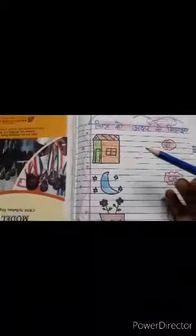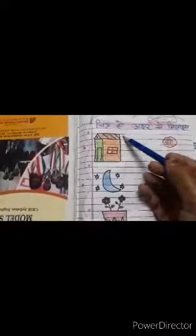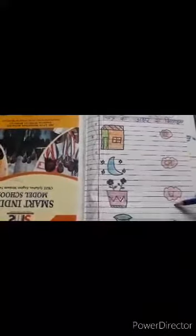Good morning kids. Today I will teach you Hindi. Chitra ko akshar se milayeya. Yaha maine kuch chitra banaye hain. Aapko chitra ko akshar se milana hai. Ghar hai. Ghar kaise hota hai? Gha se. To hum gha se isko mila denge.